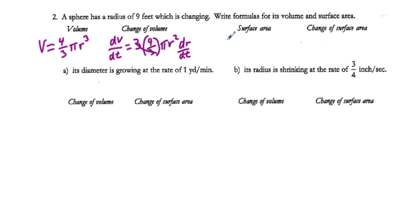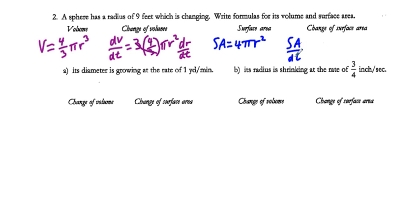For surface area, SA = 4πr². Somebody noticed in class that the surface area is essentially the first derivative of the volume formula. The change in surface area is dSA/dt = 8πr · dR/dt. With these two formulas you should be able to do parts a and b.